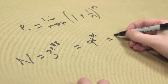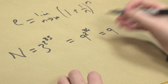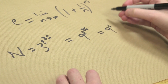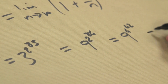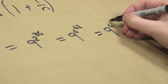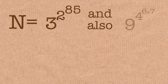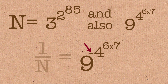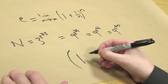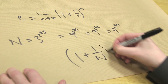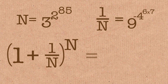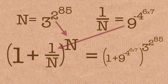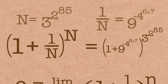Using properties of powers, that's also equal to 9 — doubling the 2 to make it a 4, and halving 84 to make it 42. Then he splits up the 42: it becomes 9 to the power of 4 to the power of 6 times 7, because 6 times 7 is 42. Sticking a minus sign in there makes it 1 over N.